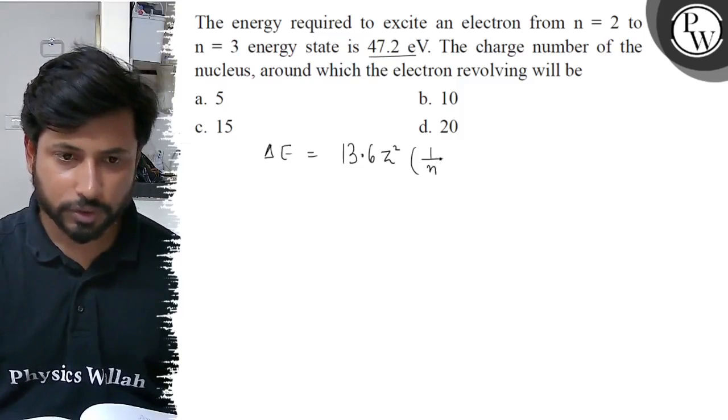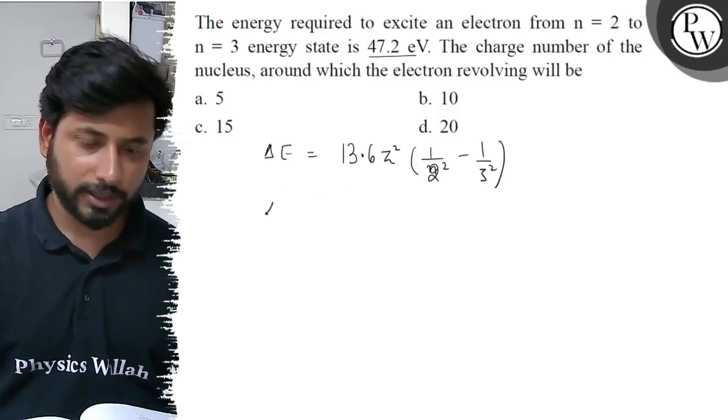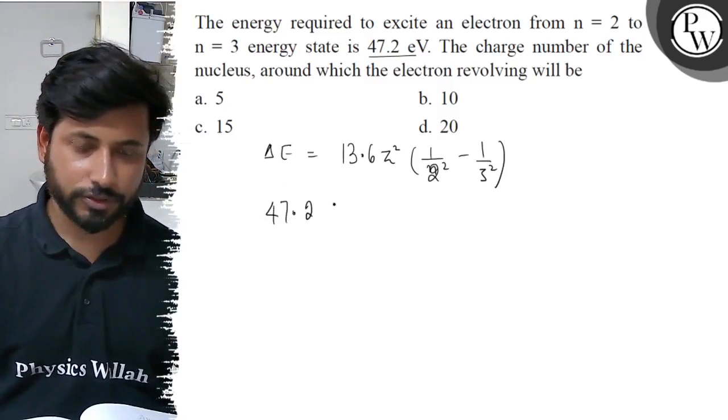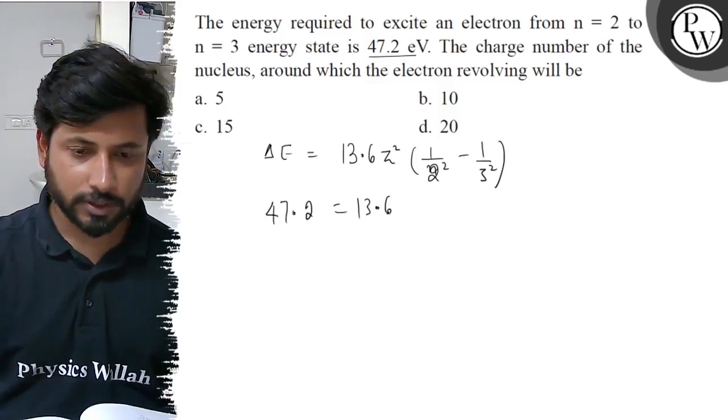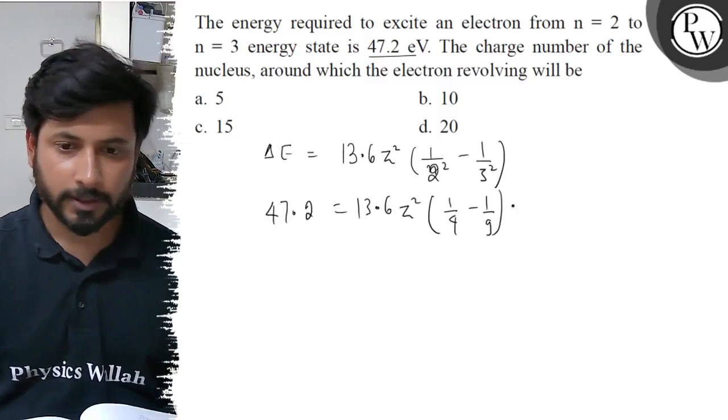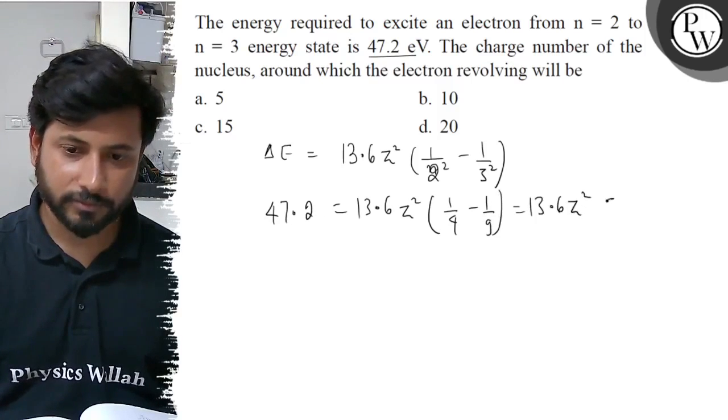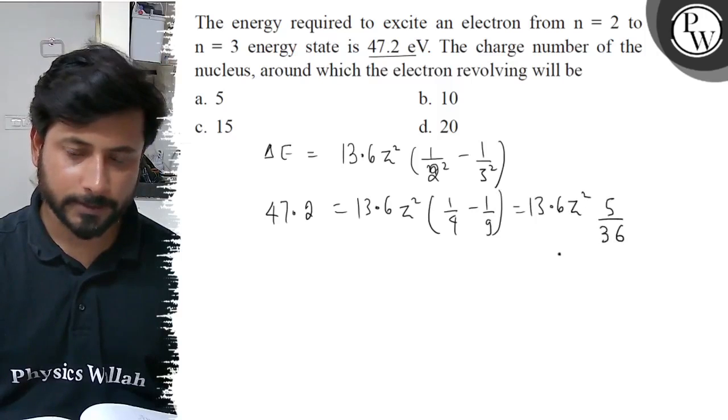Then 1 by 2 squared minus 1 by 3 squared. Now we can solve here. We have 47.2 equals 13.6 Z squared by 1 by 4 minus 1 by 9. Here we get 13.6 Z squared times 9 minus 4, which is 5, divided by 36.